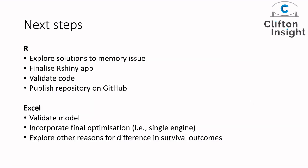As next steps in R, we plan to look at solutions to the memory issue, finalize the R Shiny app, validate the code, and publish on GitHub. In Excel, we'll validate the model and explore one final optimization — using a single engine to reduce model size, and a single set of sub-models rather than separate sub-models for each comparator — which should improve efficiency. We'll also continue investigating reasons for the discrepancy in mean costs and QALYs between the two models.